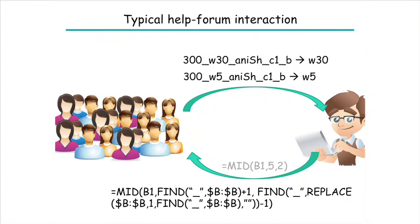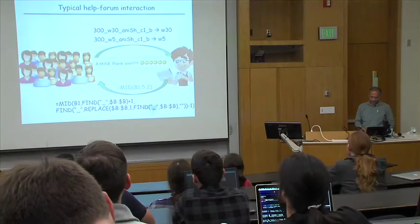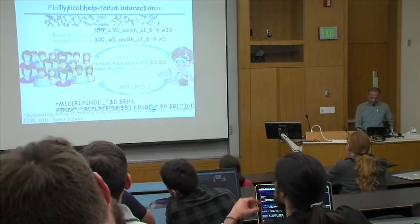This is one of the smallest programs you can write using the Excel formula language to extract the string between the first two occurrences of an underscore. The user takes this program, runs it, and is happy. But this interaction takes place over a course of days. What we would like is for this interaction to happen in a few seconds — possible if we can automate the role of the expert on the help forum.